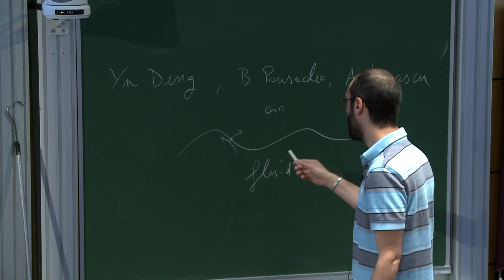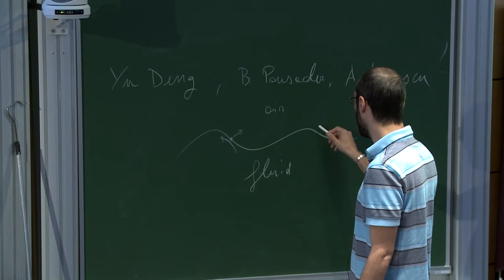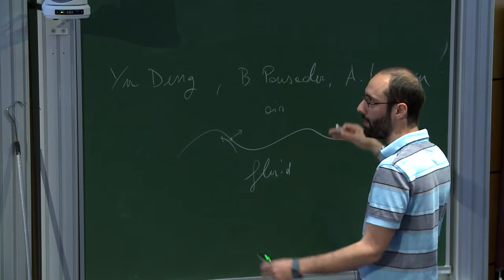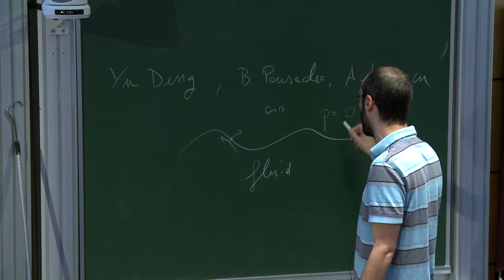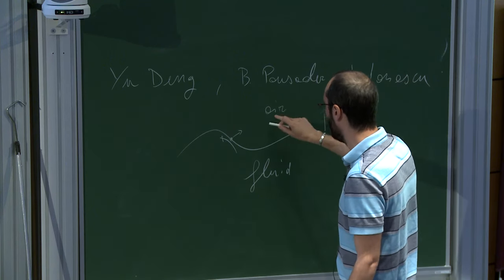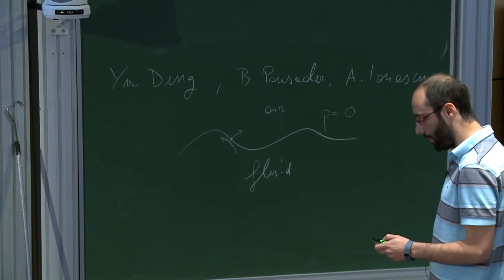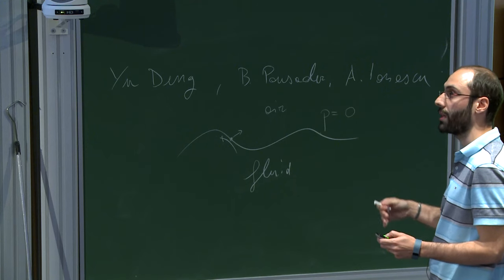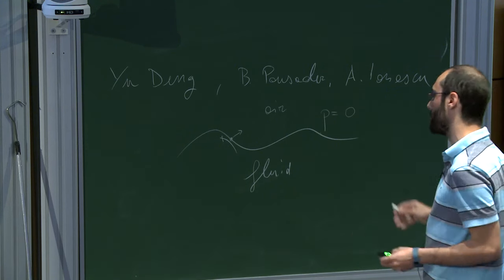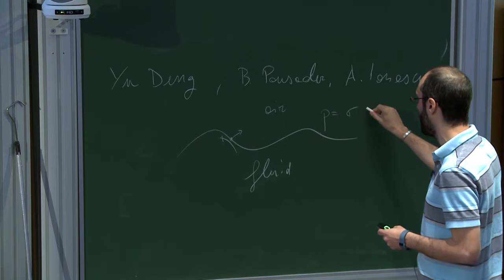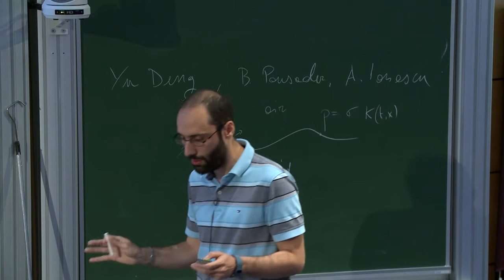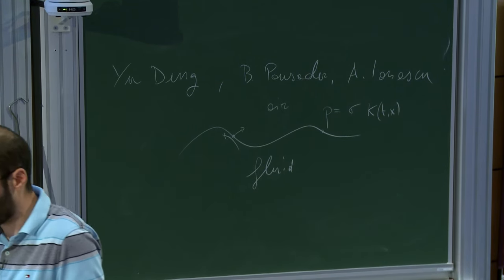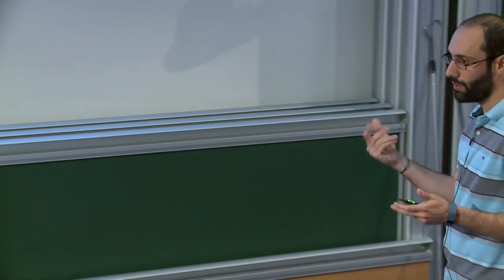There are n conditions. You need one more condition at the boundary about the pressure. The pressure inside is determined; you need to know what it is on the boundary. Either the pressure is constant — you can normalize it to zero to match atmospheric pressure — or, if you take into account surface tension effects on the surface of the liquid, the pressure is proportional to the mean curvature at the point x.